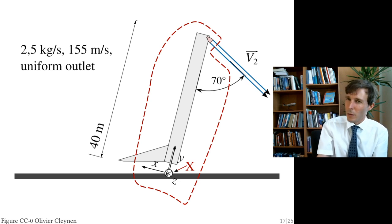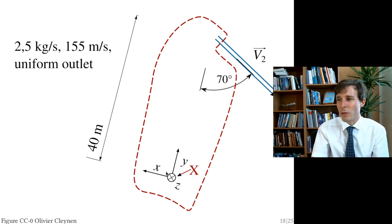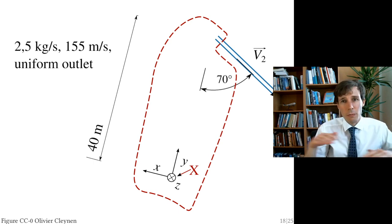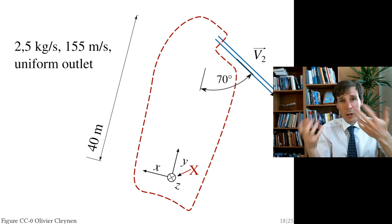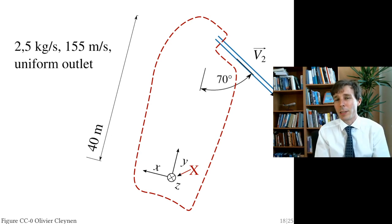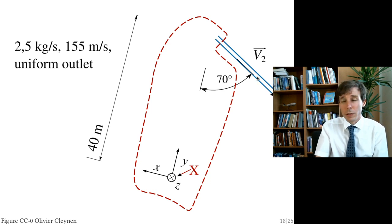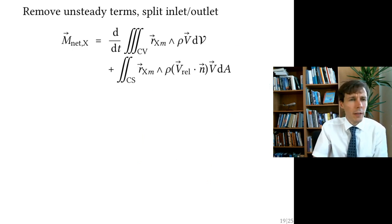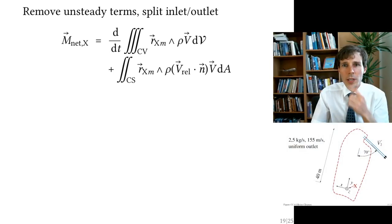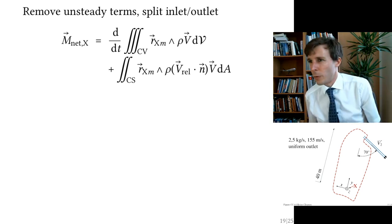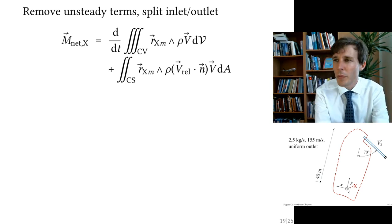We position point X — the reference point about which we calculate the moment. Then only the control volume and the outgoing flow matter: no rocket, no barge. The question is: what is the net moment exerted on the flow as it passes through this control volume? Let's look at the equation and diagram together.